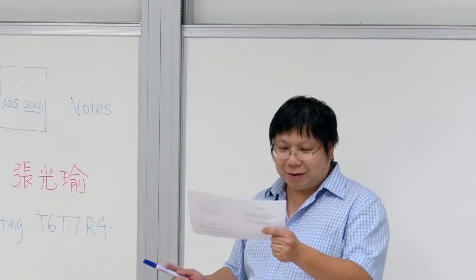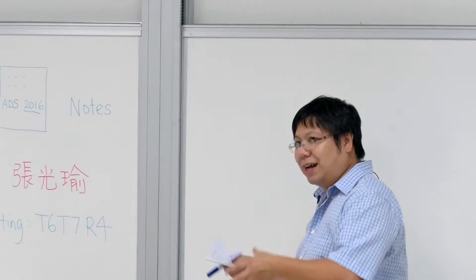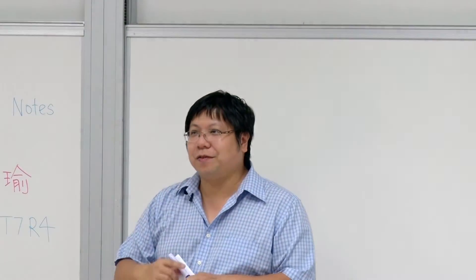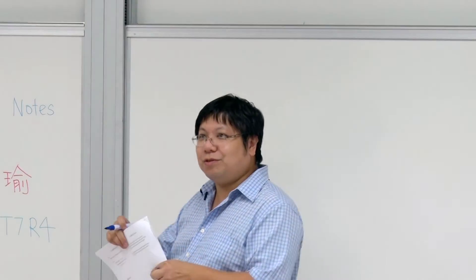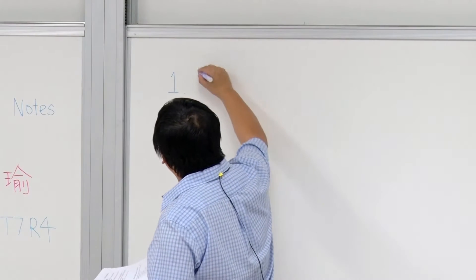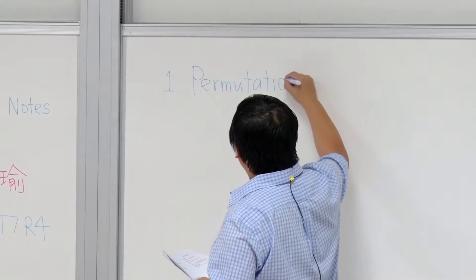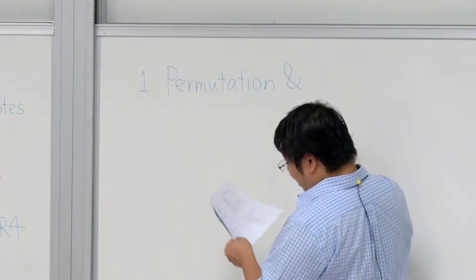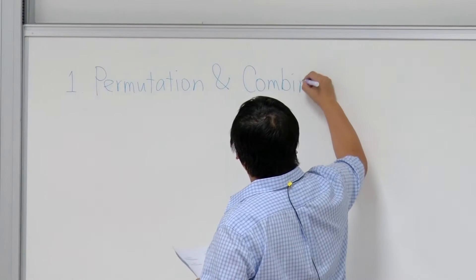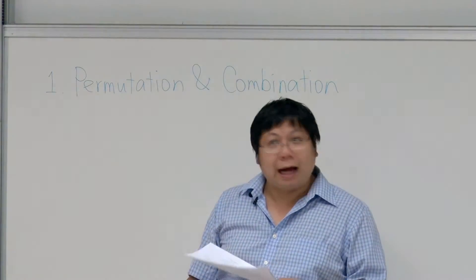So what is this course about? I'll list down the topics that we are going to study throughout this course. The first one should be familiar — it is permutation and combination. This is about combinatorics; we will talk about counting.